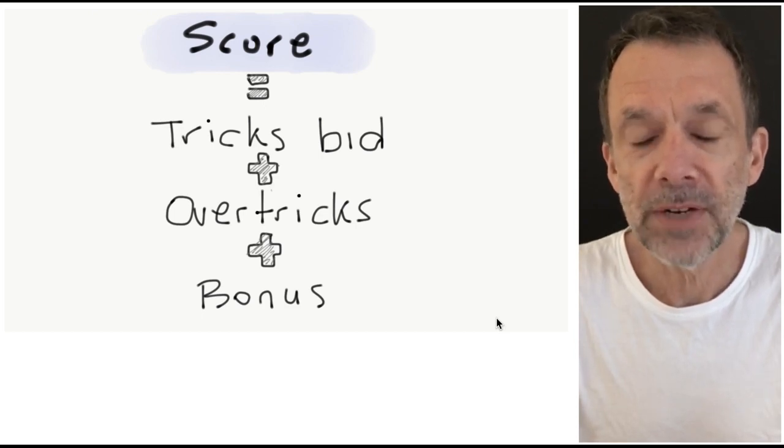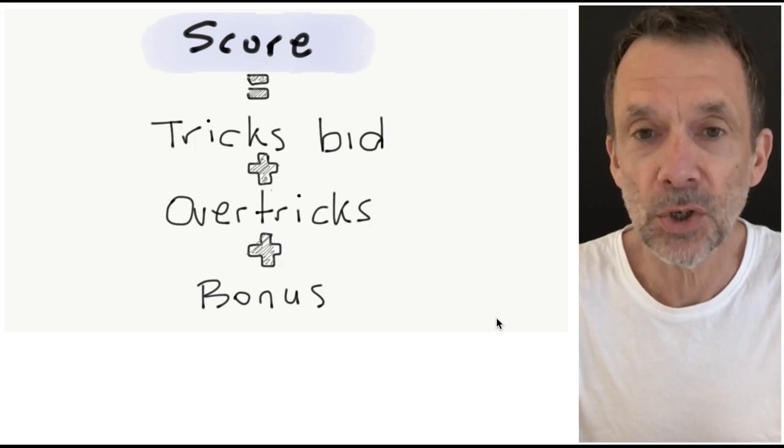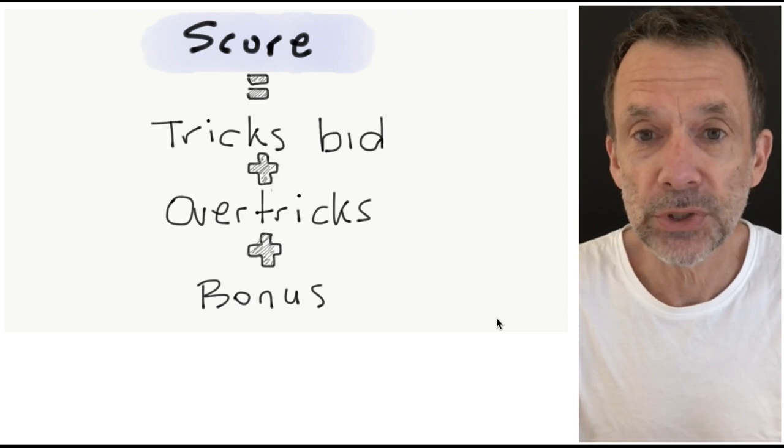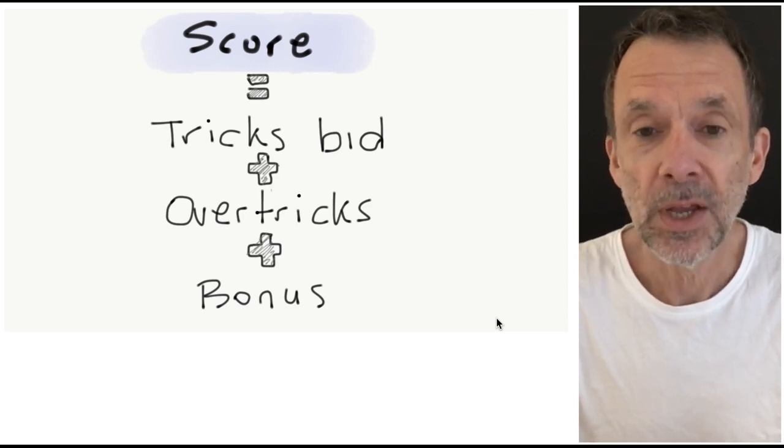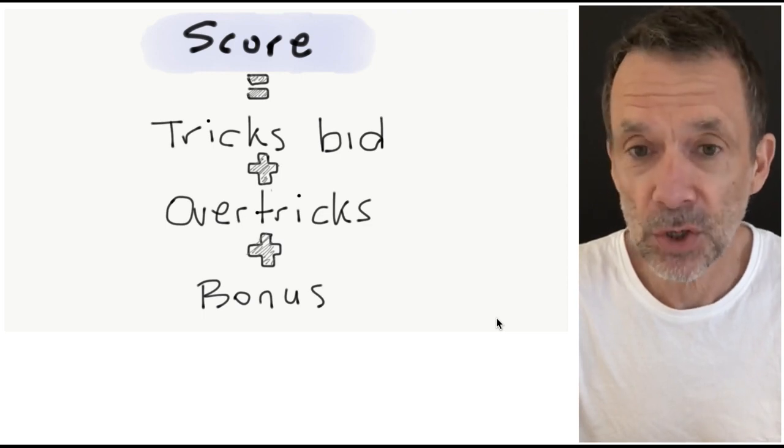Hi everyone. In our previous scoring videos we learned that the score for making a contract is made up of three parts: we get points for tricks bid and won, we get points for overtricks, and we get a bonus every time we make our contract.